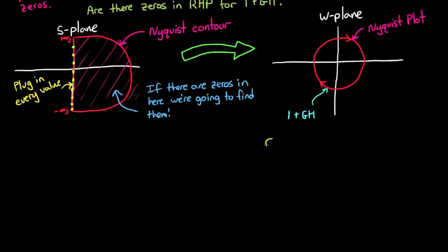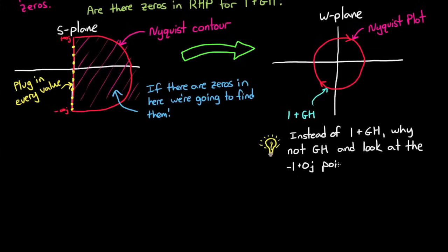To do this mapping, though, we need to find the plot for GH, and then shift the entire plot to the right by 1. But this is kind of difficult because there's lots of curves and circles, so instead of shifting the plot to the right by 1, we shift the origin to the left by 1. And this is why we're concerned with how many times minus 1 is circled instead of how many times the origin is circled.